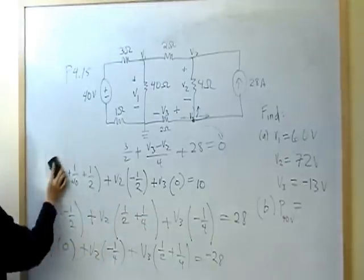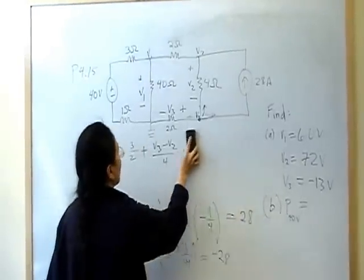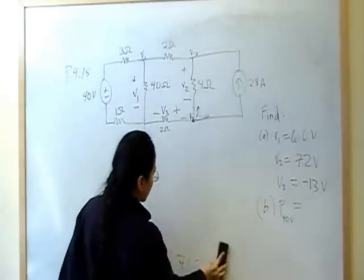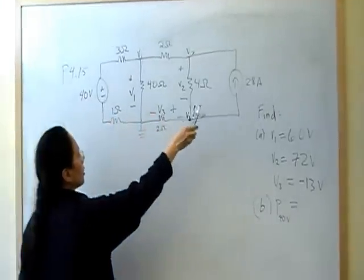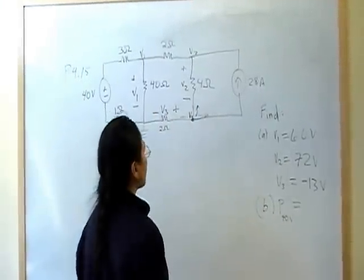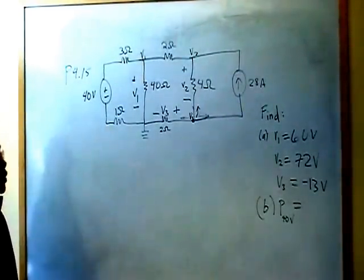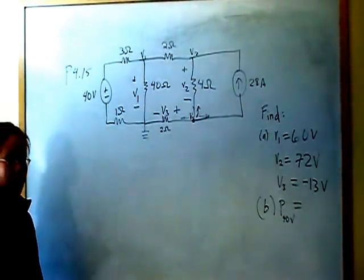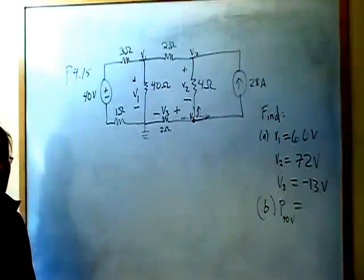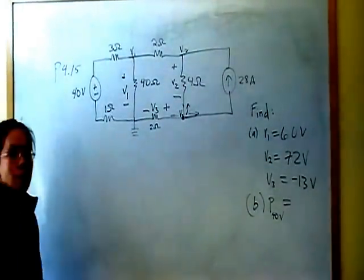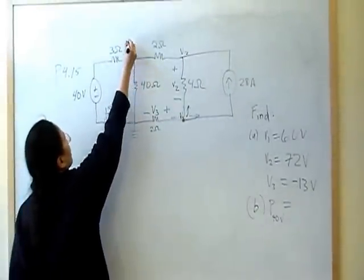Now, the second part asks us about power dissipated by the 40 volts. So remember, P is equal to VI. The question is, is this 40 volt? So you have two independent sources, right? And they can either generate or dissipate. And the question is, what is this doing? Is it generating power? Or is it receiving a charge?